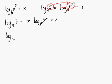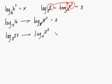How about log base 3 of 27? Well, this can be written as log base 3 of 3 cubed, right? So these two 3's cancel out, and you're left with 3.